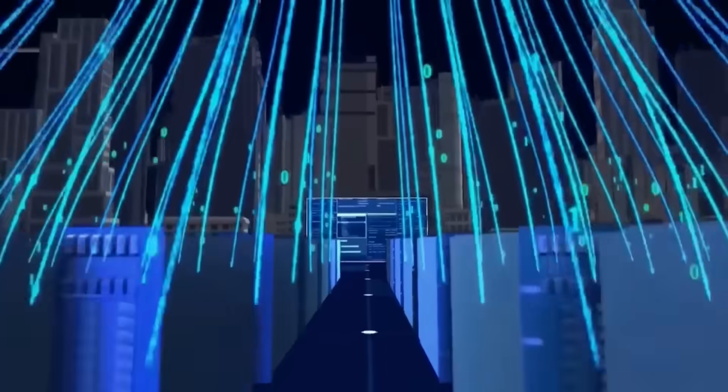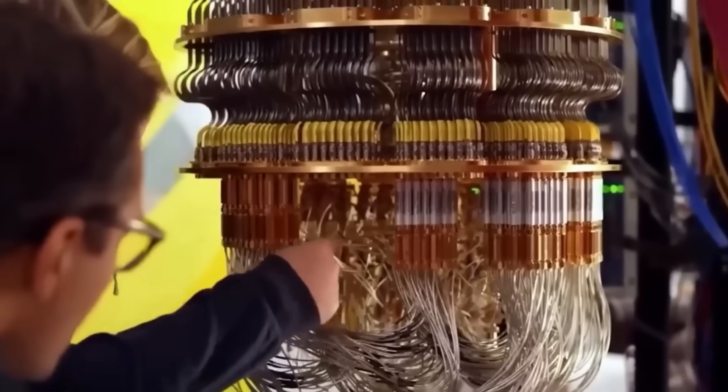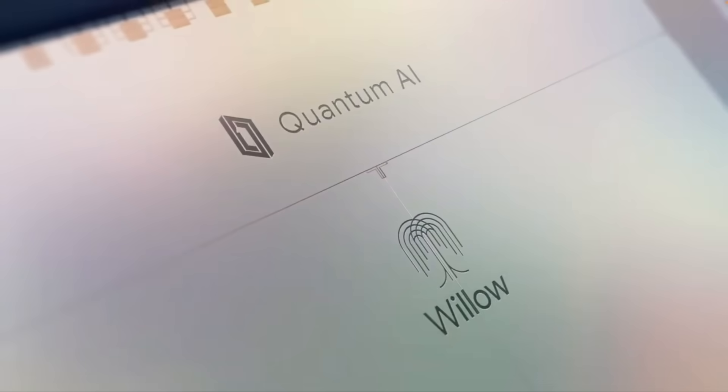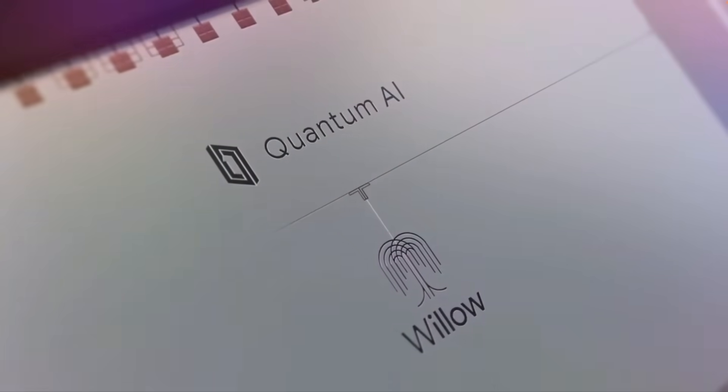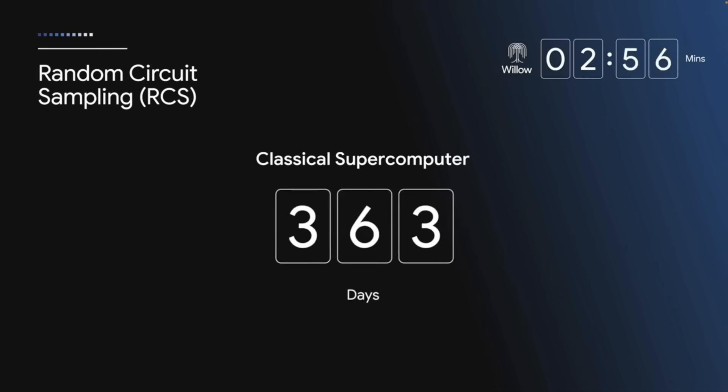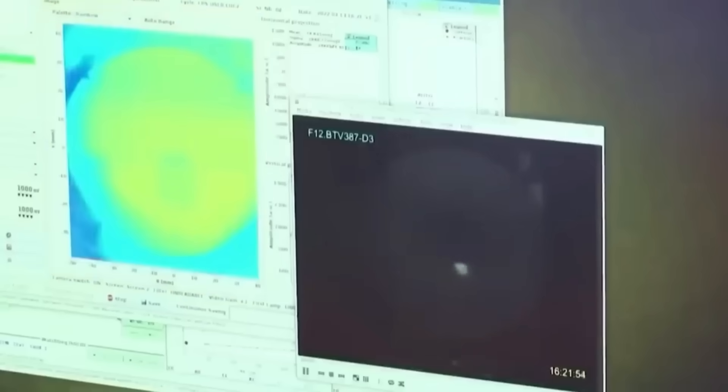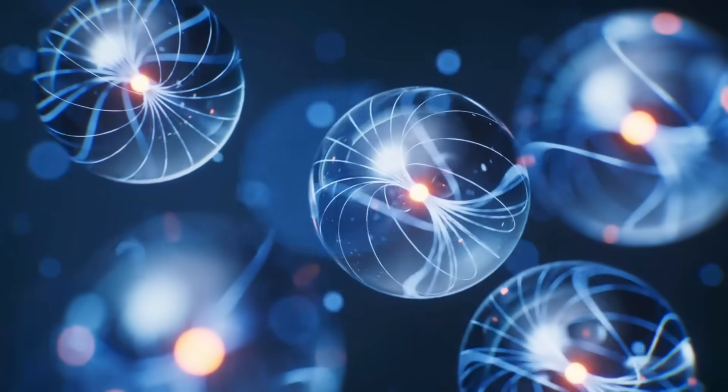the breaking of public key cryptography that secures our digital world. RSA and elliptic curve cryptography protect everything from your banking app to military communications. They work because certain math problems are too hard for classical computers to solve quickly. But quantum computers can solve these problems exponentially faster, using Shor's algorithm, turning years of computation into minutes.